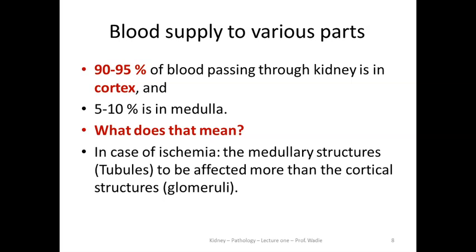We know that 90 to 95 percent of blood passing through the kidney is in the cortex. The cortex is very rich in blood. However, the medulla receives less blood — 5 to 10 percent is in the medulla. The importance of this information: you can anticipate that in case of ischemia, the medullary structures — that is, tubules — you expect them to be affected more than the cortical structures. Later on we are going to see acute tubular necrosis whenever there is ischemia.